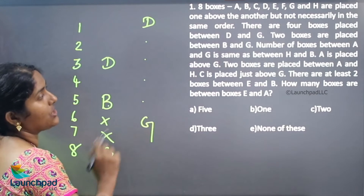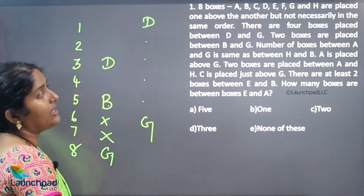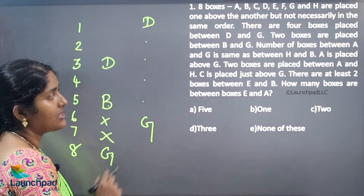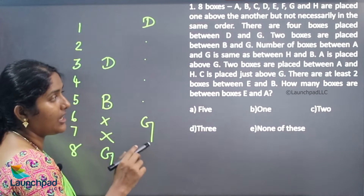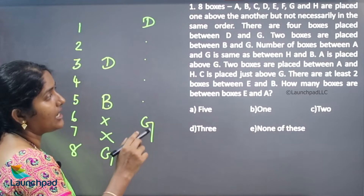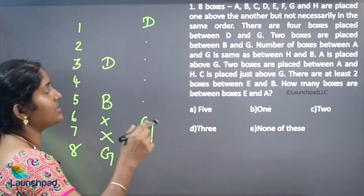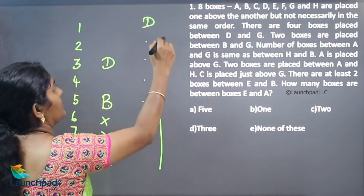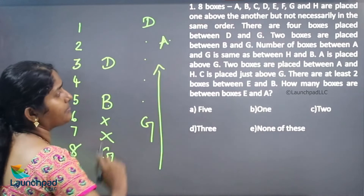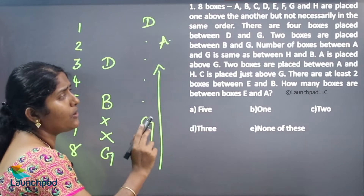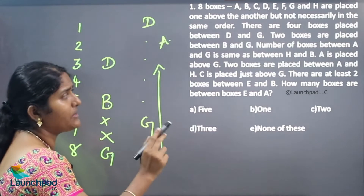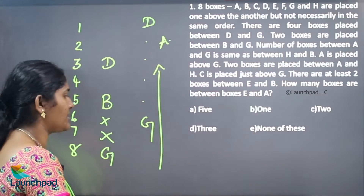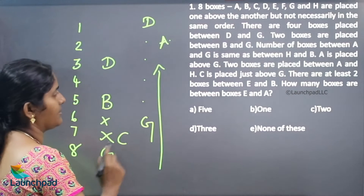A and G — we don't know where A is. 2 boxes are placed between A and H. And A is placed above G. C is placed just above G.